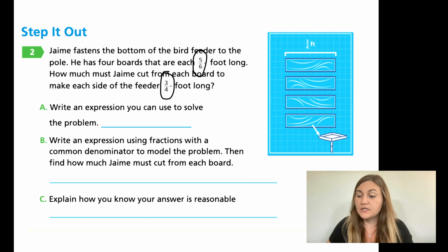So for A, write an expression that you can use to solve the problem. Remember the expression, not the equation, no equal sign. B, write an expression using fractions with common denominators to model the problem. Then find out how much Jamie must cut from each board. So this, find the new expression with the common denominators, then solve. Make sure you get your units. And C, explain how you know your answer is reasonable. And again, there is a huge variety of answers that will make this correct. Yours does not have to be the exact same as mine. All right, go ahead and solve these three questions, and then join me back when you are done.